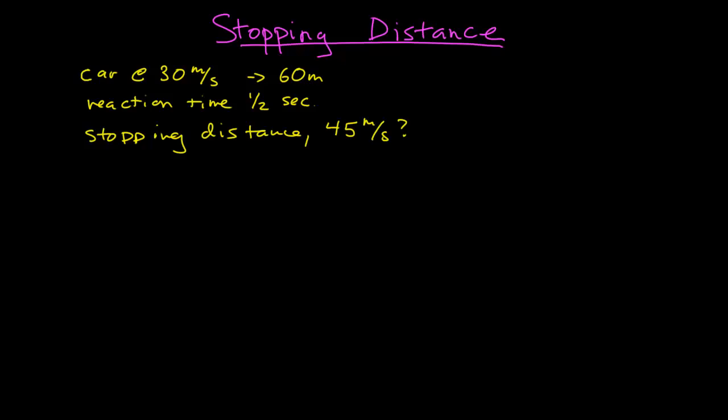I want to look at the stopping distance problem again. I have a car going 30 meters per second, and it stops in 60 meters. It's a minimum stopping distance with a reaction time of half a second. What is the stopping distance if the car were going 45 meters per second?